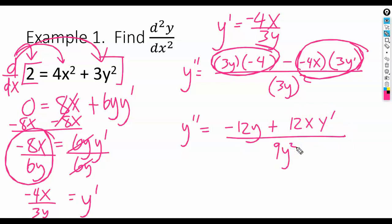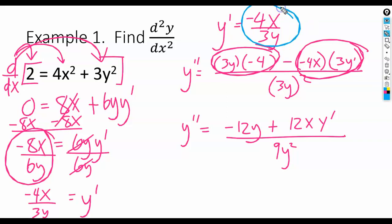Here's where we're going to do something a little bit different. We're not going to leave a y' there. What we're going to do is replace y' with what y' equals — and y' equals negative 4x over 3y. Let me show you what that will look like.